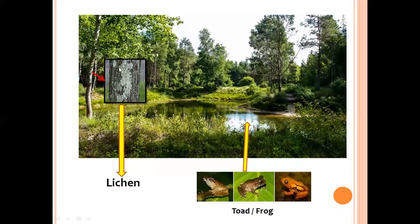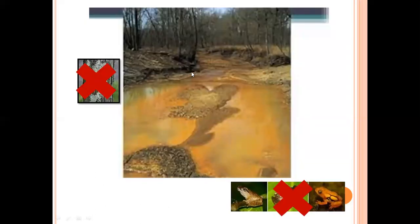Similarly, lichens — which are a symbiotic association between algae and fungi — are very sensitive to increases in sulfur dioxide concentration in the atmosphere. If we keep burning fossil fuels, lichen species start disappearing from areas where the air is contaminated. Such species are called indicator species because they indicate pollution or environmental change — they either move out or die.